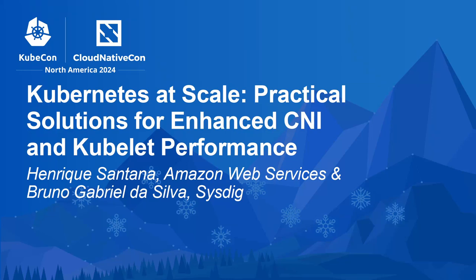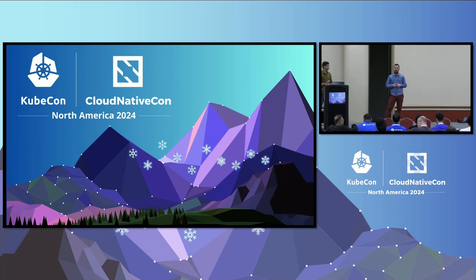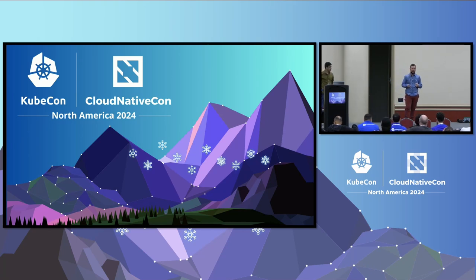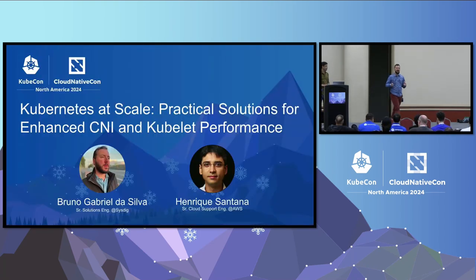Welcome, everyone. Thank you for being here. I know it's a long journey walking from the venue to here, so thank you so much for making that. Before we start the presentation, I'd like to check who in here has a single cluster running with at least 50 nodes, 100 nodes, 1,000 nodes — some brave people here. Today we're going to talk about Kubernetes at scale, or better said, problems when you scale and some tricks we can use to enhance CNI and Kubelet.